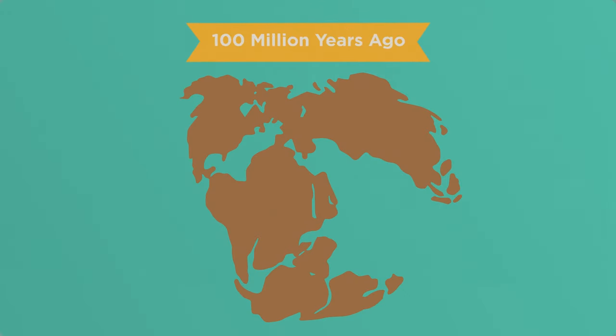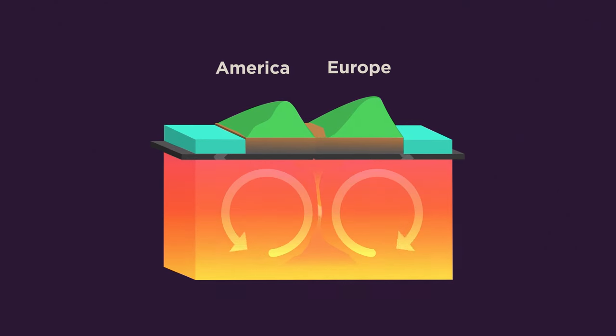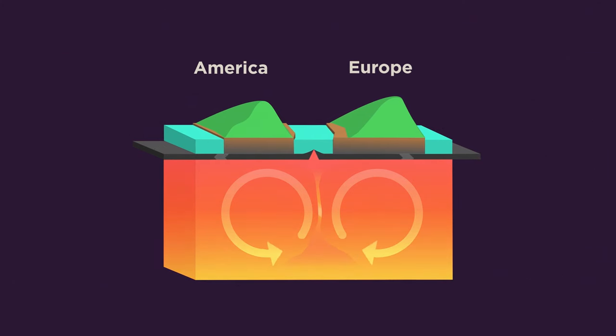A hundred million years ago, when dinosaurs roamed the Earth, Europe and America were joined and there was no Atlantic Ocean. These convection currents gradually pulled the two continents apart. First, a rift valley formed which got flooded with seawater, and the new Atlantic Ocean was born.